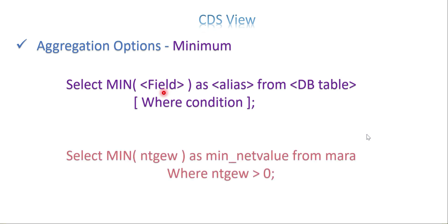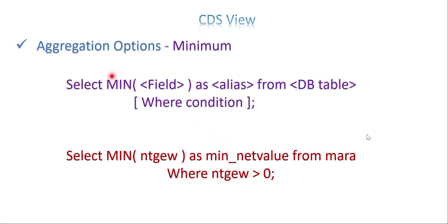One example: if you want to get the minimum net value of materials, you use MIN of net value, and you can optionally add a WHERE condition. It's pretty simple. Same for maximum - instead of MIN you use MAX.